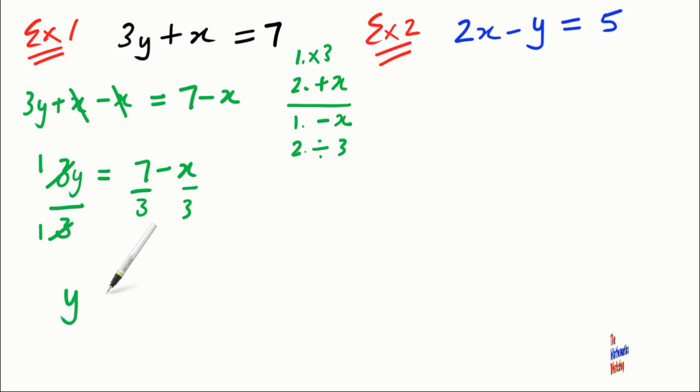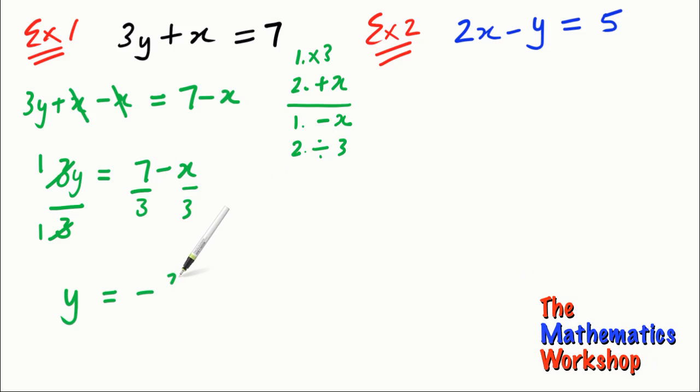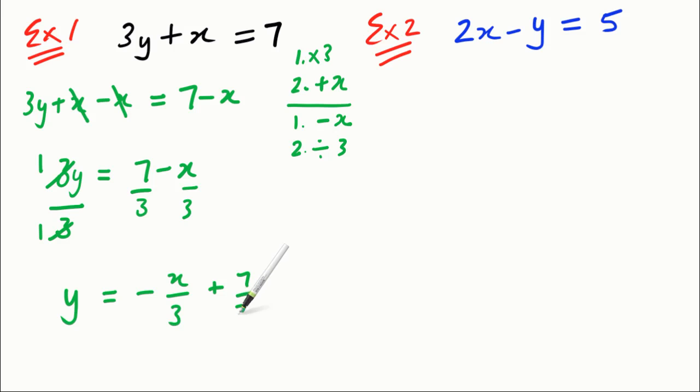I'm just going to rearrange these terms and put this term first, so minus x on 3 and then this is plus 7 thirds, and there you have it. Now y is the subject in this equation.